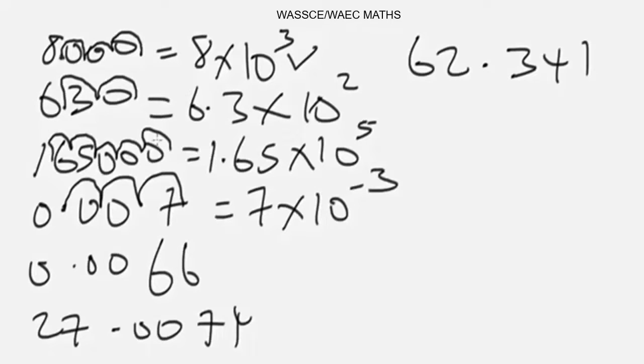When you are moving forward, the power of the exponent will be negative. And when you are moving backwards, the power of the exponent will not be negative—it will be a positive number.